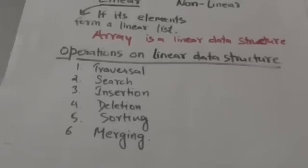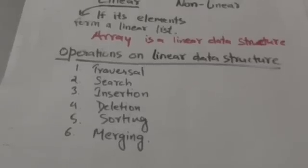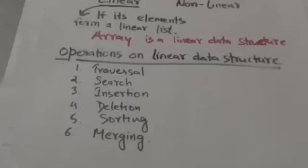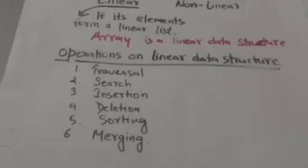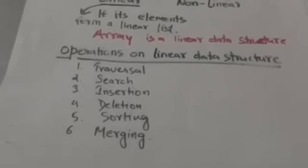Fourth is deletion. Deletion means removing an element from the list. Fifth is sorting. Sorting means arranging the elements of the list in some order, for example arranging the elements of the list in increasing order. Sixth is merging. Merging means combining two lists into a single list.